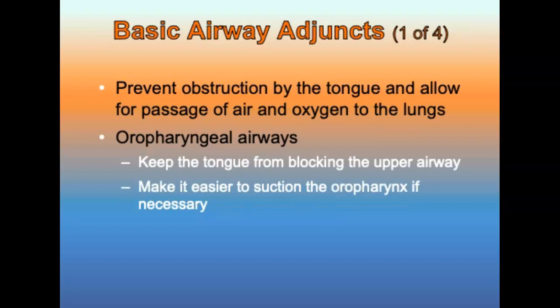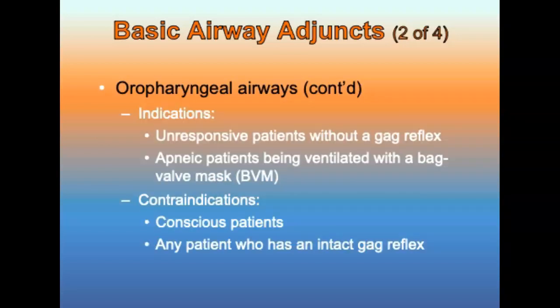Now let's talk about basic airway adjuncts. An airway adjunct prevents obstruction of the upper airway by the tongue and allows for passage of air and oxygen to the lungs. The first is the oropharyngeal airway (OPA), which keeps the tongue from blocking the upper airway and makes it easier to suction the oropharynx. Indications include unresponsive patients without a gag reflex or apneic patients being ventilated with a BVM. Contraindications are conscious patients or any patient with an intact gag reflex.